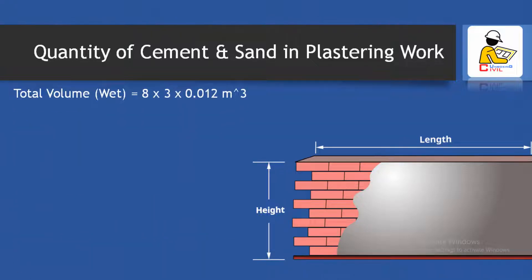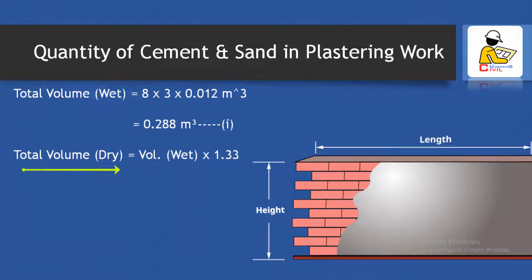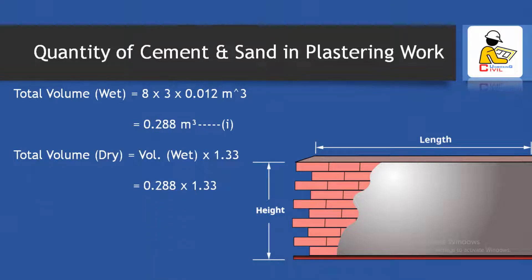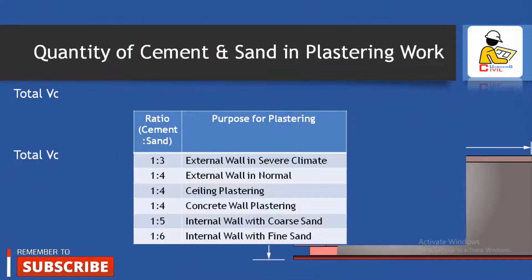Now we have to calculate the dry volume. The dry volume of mortar contains a certain amount of air and voids between the particles of fine aggregate, so the volume in dry condition increases by 30 to 35 percent. We consider 33 percent increment, so dry volume equals 1.33 × 0.288, which comes to 0.383 cubic meter.